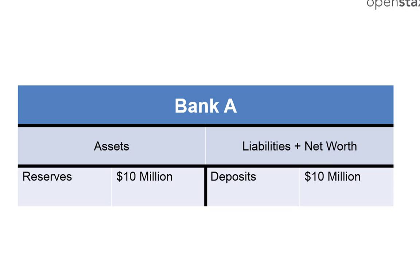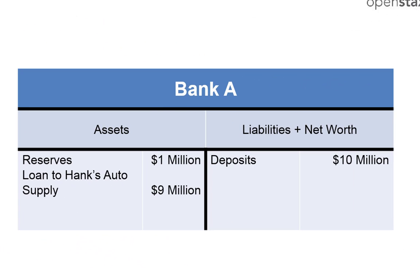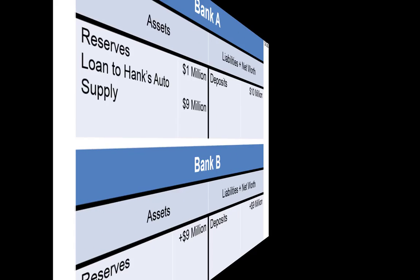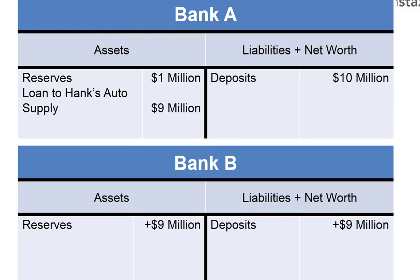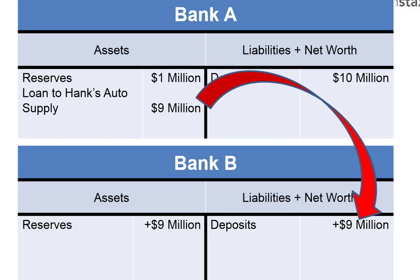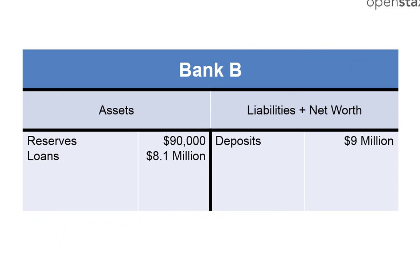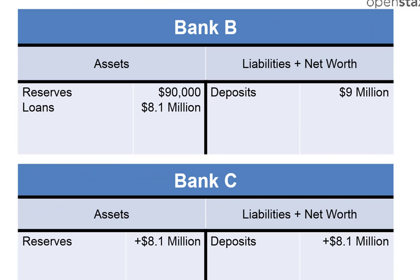Now that we know about balance sheets and the accounts that banks have, let's talk about how banks create money. Here's an example: Bank A has ten million dollars in deposits and ten million dollars in reserves. The bank decides to loan out nine million dollars to Hank's Auto Supply. As soon as Bank A loans that money to Hank's Auto Supply, Hank will take it and redeposit it in Bank B. Bank B now has a choice to either keep that money in reserves or lend it out — and it does. Bank B lends out eight point one million dollars, and the borrower of that loan will deposit it in Bank C, which will then face the same decision.